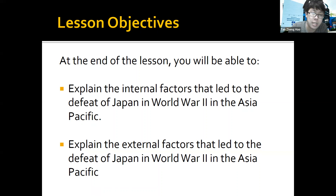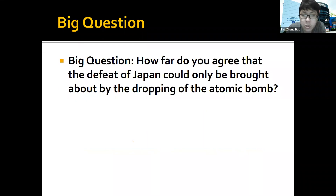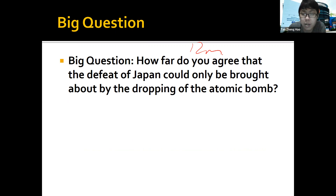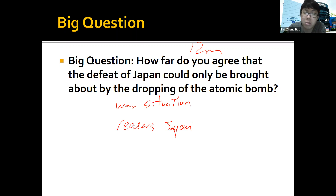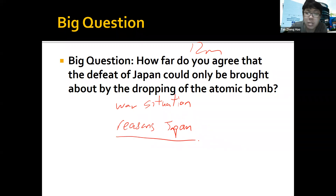At the end of this lesson, you should be able to explain two kinds of factors that tell you why Japan was defeated. The big question underlying this is a 12-mark essay question they may ask you: how far do you agree that the defeat of Japan could only be brought about by the dropping of the atomic bomb? To answer this, you need to know what the war situation was and what were the reasons Japan lost — were there other reasons that could have defeated Japan without using the atomic bomb?